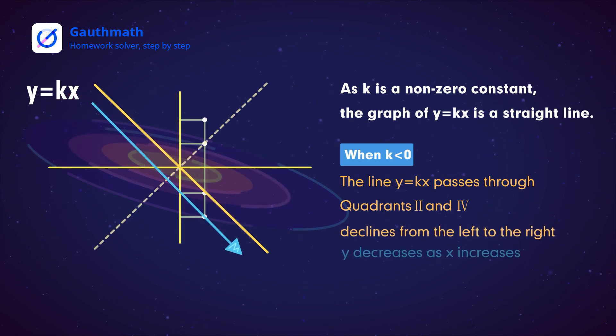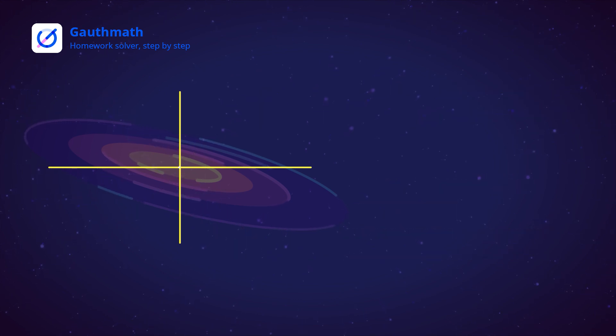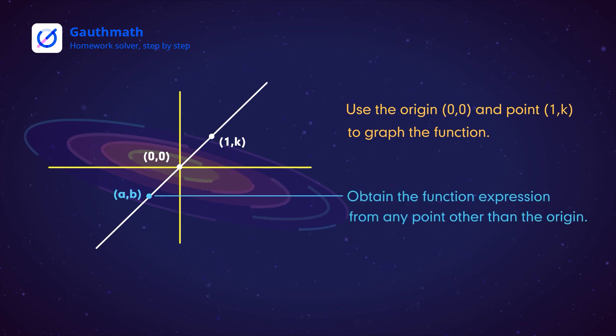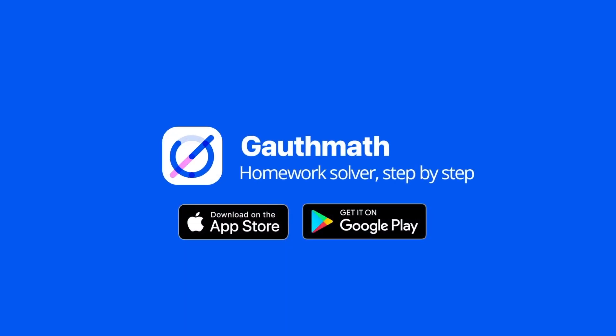As we all know, any two distinct points in a plane determine a line. We usually only use the origin (0,0) and point (1,k) to graph the function. We can also obtain the function expression from any point other than the origin.